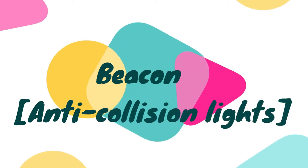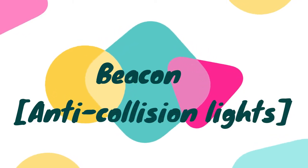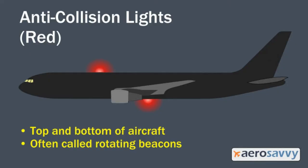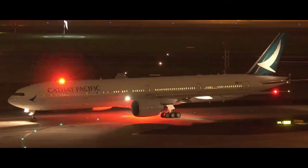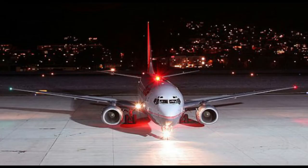Beacon: the aircraft beacon lights are red in color and either flash or rotate to provide a pulsating warning light. They are normally installed in pairs, with one on the top of the fuselage and the other on the bottom. The beacon is normally turned on prior to engine start and turned off after engines have been shut down.